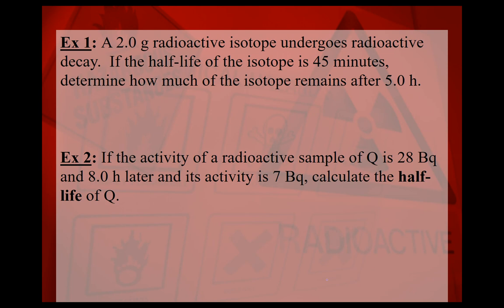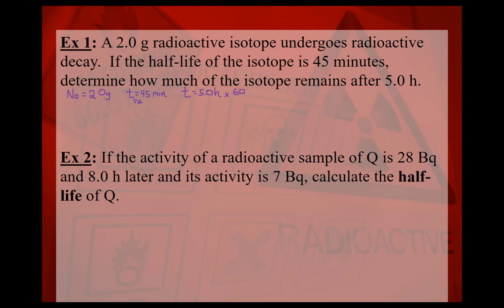Let's do a couple of examples. A 2.0 gram radioactive isotope undergoes radioactive decay. Let's identify the variables: N₀ is 2.0 grams (the amount you're starting with). The half-life of the isotope is 45 minutes, so T½ = 45 minutes. We want to know how much remains after 5 hours. This is a simple calculation, but note the units — make sure time units match. Converting 5 hours to minutes: 5 × 60 = 300 minutes.